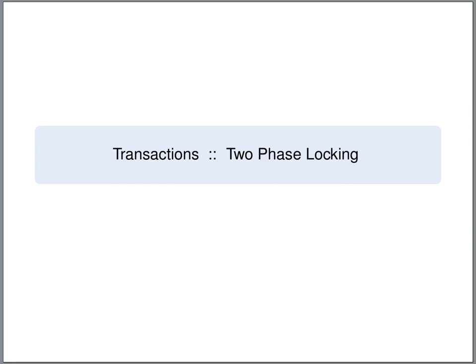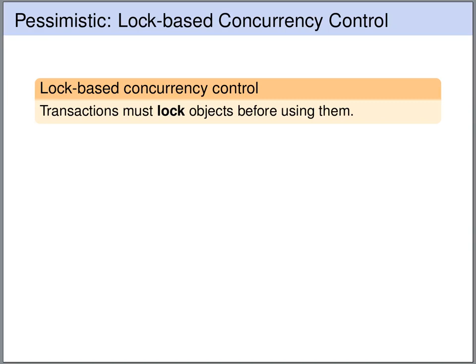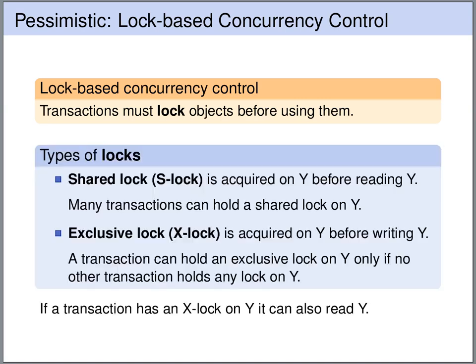The main strategy of concurrency control in database management systems today is two-phase locking. The basic idea of lock-based concurrency control is that transactions must lock objects before accessing them. There are different types of locks: shared locks and exclusive locks, denoted S and X respectively. A shared lock needs to be acquired on an object before reading it, and as the name suggests, many transactions can hold a shared lock on the same object.